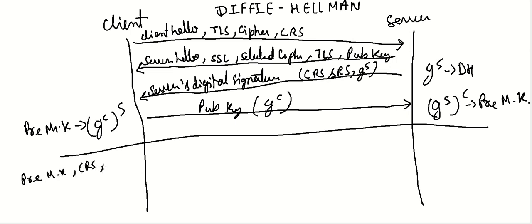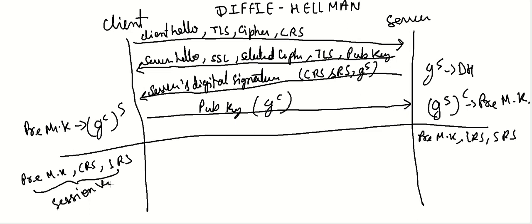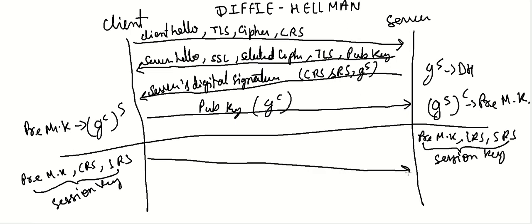Using the client random secret, server random secret, and the pre-master key, a session key will be created. The session key will be created on both sides and will result in the same key since they are created using the same parameters. This session key will not be shared over the network. When the keys are generated, the client will send a message that it's ready, encrypting it with the session key.